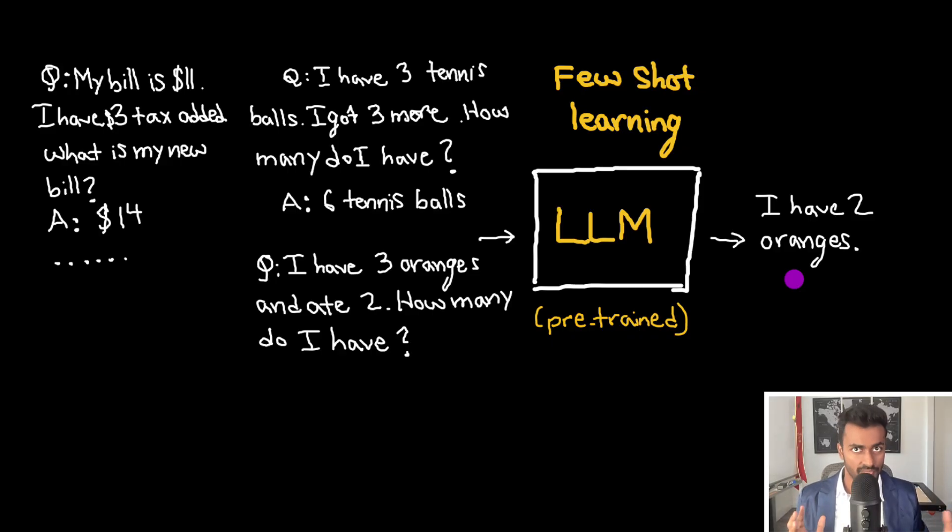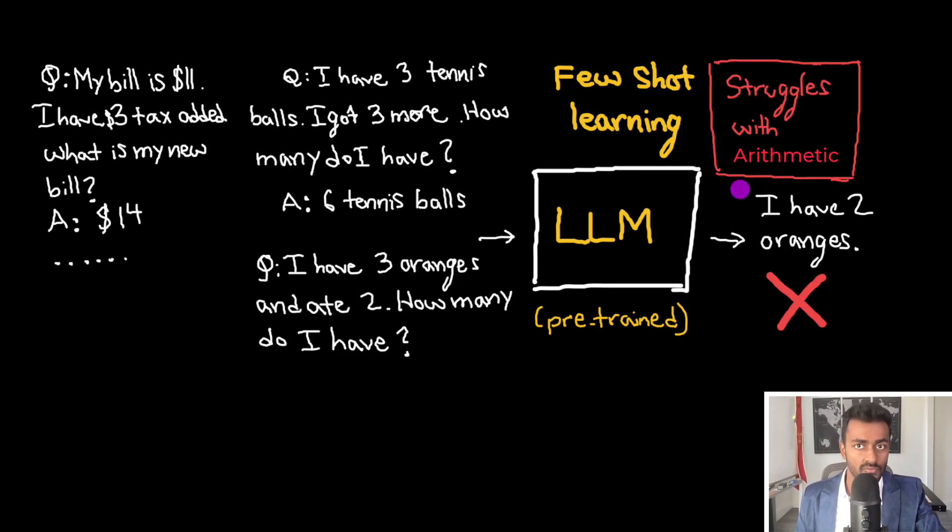However, for certain other types of problems, especially those that involve arithmetic, we can see that the answer that is given is wrong. And so it struggles with arithmetic. And so for example, I have three oranges and ate two, how many do I have? The correct answer is not two oranges. So how do we deal with this?